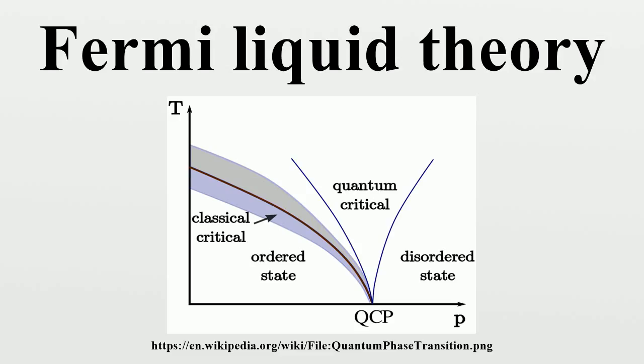Liquid helium-3 is a Fermi liquid at low temperatures. Helium-3 is an isotope of helium with two protons, one neutron, and two electrons per atom.